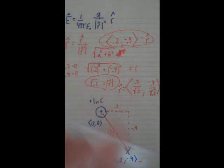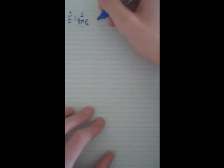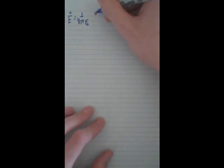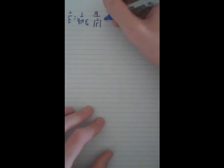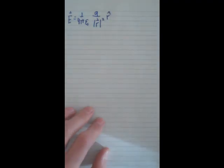Now that we have that, we can focus on these other points. Let me get into a fresh paper real quick. Let me write down the equation. E field equals 1 over 4πε₀ times charge over magnitude of distance squared times r̂.